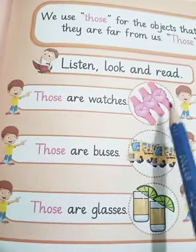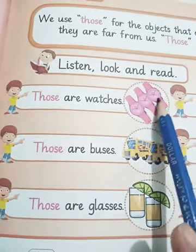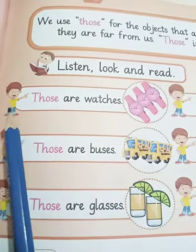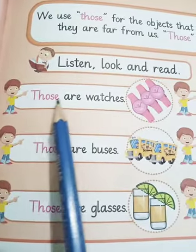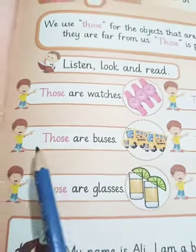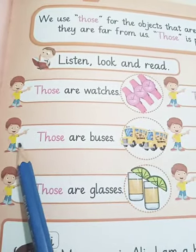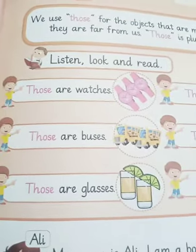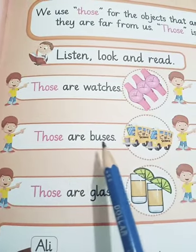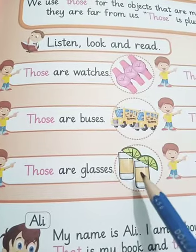Listen, look, and read. See — what are those? The boy is here and there are three pink watches far from the boy, so the boy is saying: 'Those are watches.' Now see the next picture — buses. Buses are far from the boy, so the boy is saying: 'Those are buses.'